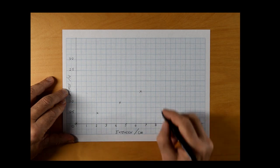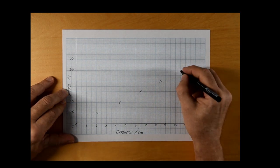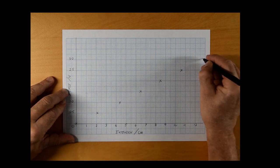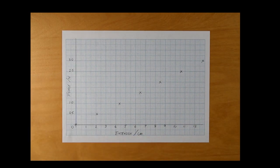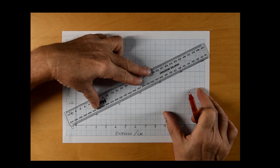0, 0, once again, is a valid point and should be plotted. The plots clearly produce a straight line. A line of best fit should be drawn with a ruler going through 0, 0.